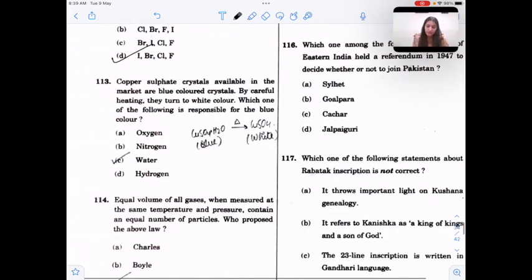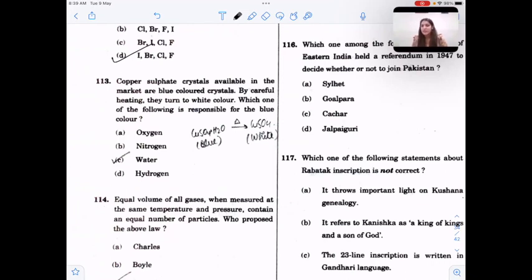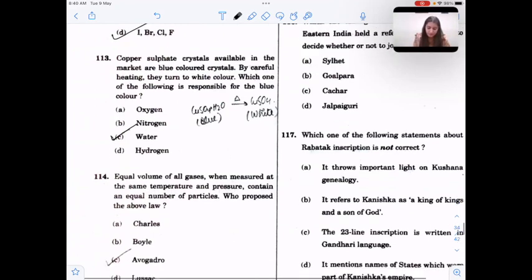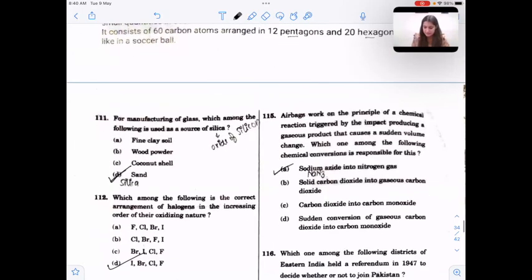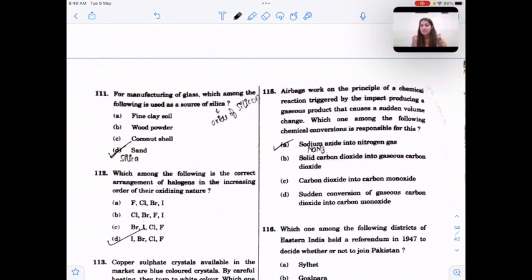These are general questions that we did in class. Copper sulfate crystals are available in market. They are blue in color, but after heating, they turn white. So the blue color was due to hydration, due to water of crystallization that were present. So after their removal, we have only copper sulfate, which is white in color. Equal volume of all gases measured at same temperature and pressure contain equal number of particles. So this law was proposed by Avogadro's. Airbags work on the principle of a chemical reaction producing a gaseous product. The gaseous product produced is nitrogen gas and it is produced by sodium azide. Formula for sodium azide is NaN3.